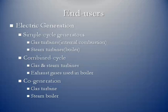Within electric generation, we have different types of generators. A simple cycle generator has gas turbines — these are essentially jet engines, internal combustion, using natural gas as a fuel. Then there are steam turbines, where natural gas goes into a boiler first and creates steam, and the steam is used to push the turbines. You also have combined cycle plants, which use a combination of gas and steam turbines. The gas turbine uses natural gas as fuel, but it has exhaust heat, which is then pumped into a boiler where it creates steam, which drives a steam turbine. Combined cycle natural gas plants are among the most efficient.